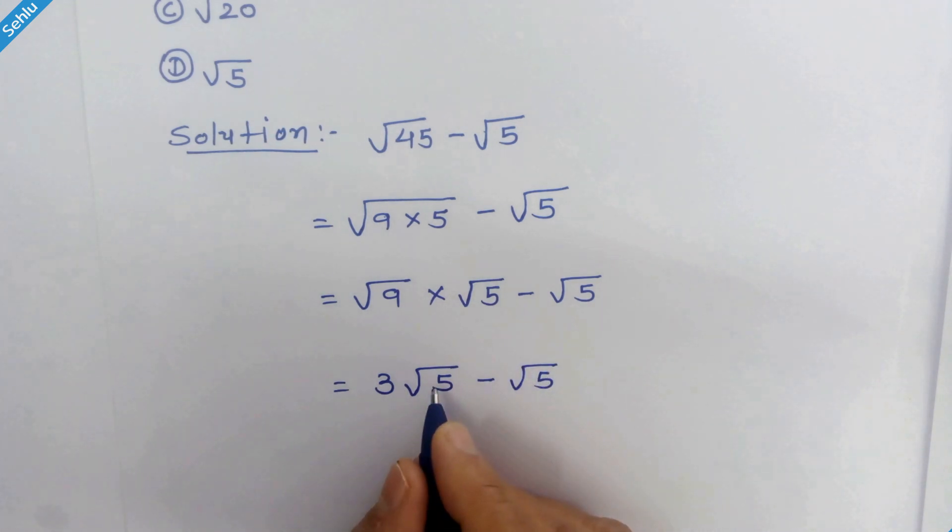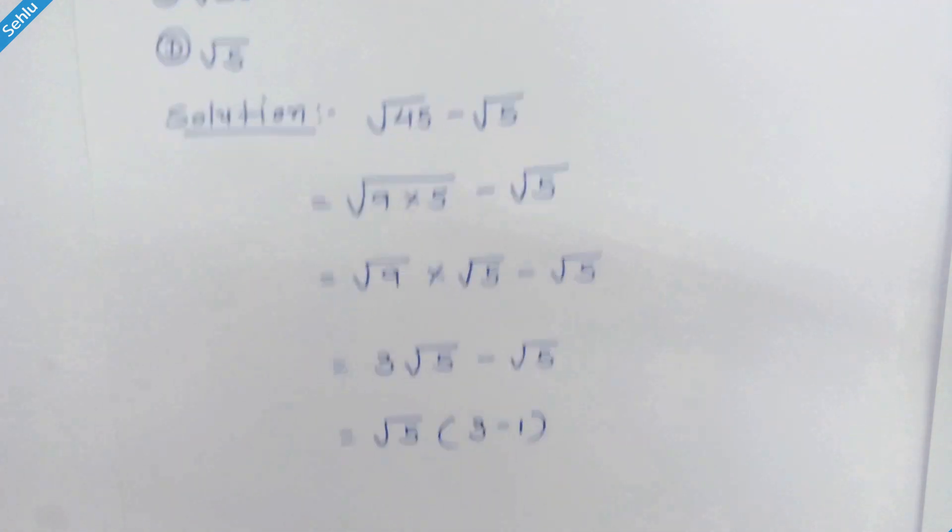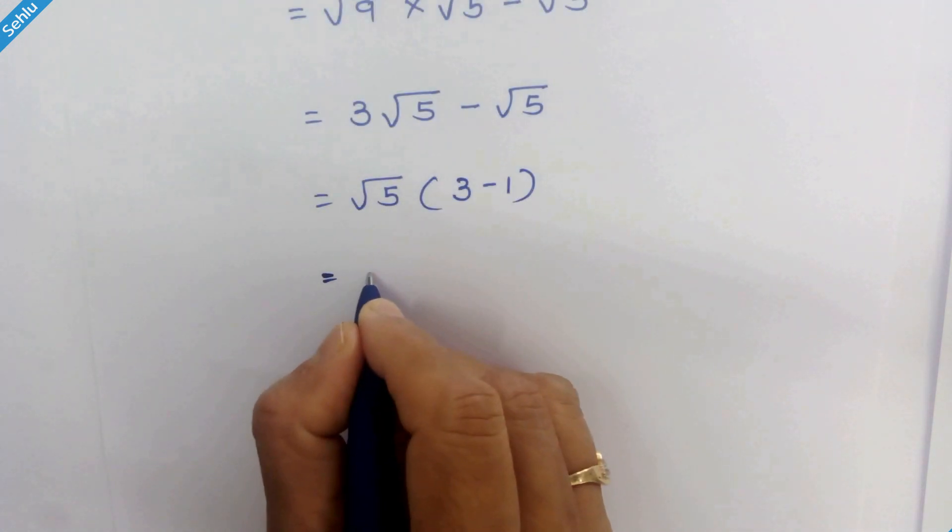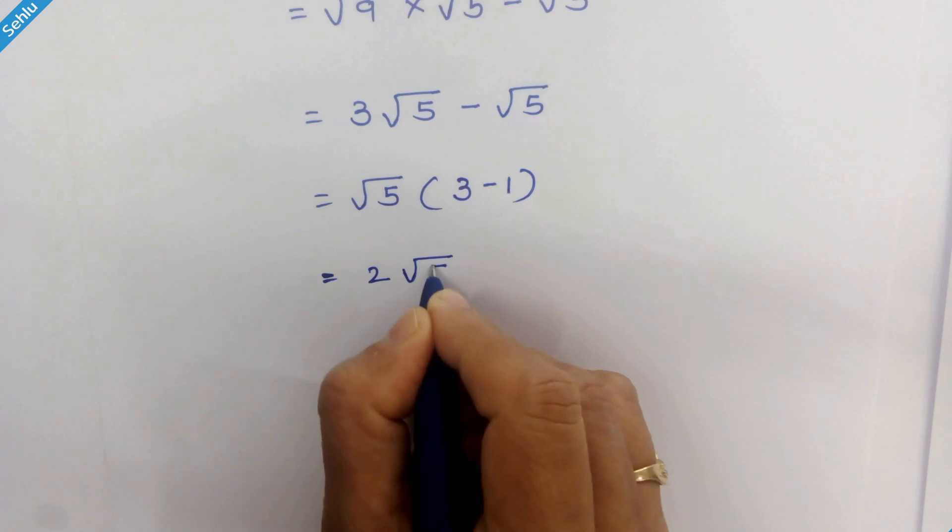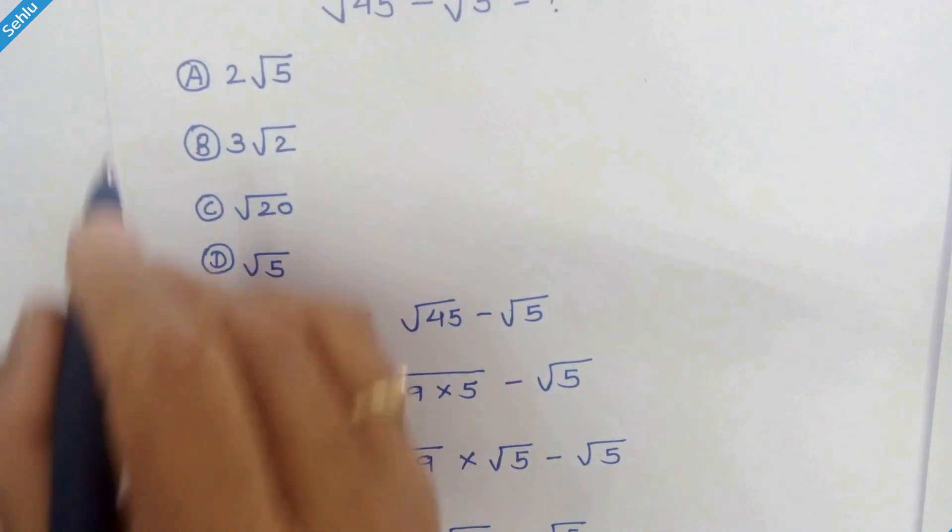We will factor out square root of 5. So we have square root of 5 times 3 minus 1. So it will be 2 times square root of 5. So option A is the right answer.